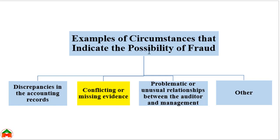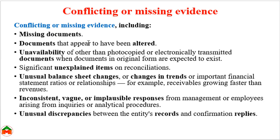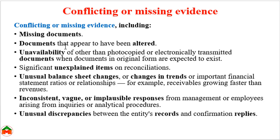Now we move to circumstances indicating the possibility of fraud from the perspective of conflicting or missing evidence. Examples include: whenever as an auditor you don't find important documents — that is, missing documents — and whenever documents appear to have been altered, meaning amounts in a document have been changed by employees, which can be considered missing evidence of the true fact.